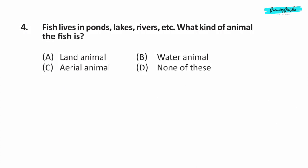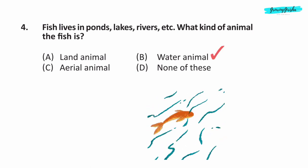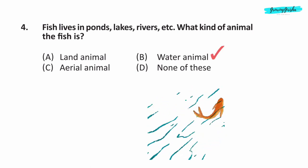Question 4. Fish lives in ponds, lakes, rivers, etc. What kind of animal is the fish? Option B — Water animal.